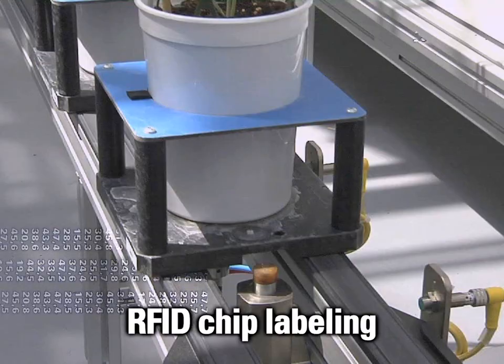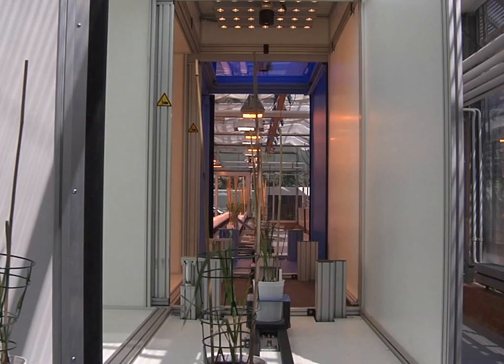By using latest RFID technology, each plant can be automatically identified and tracked throughout its whole life cycle in the greenhouse.